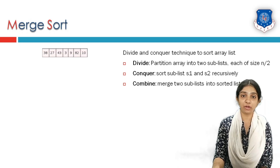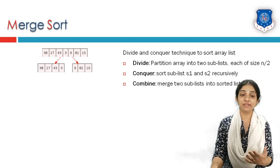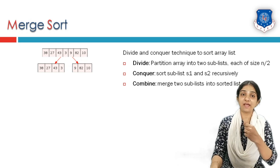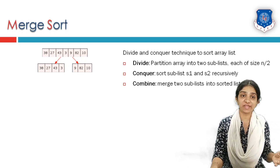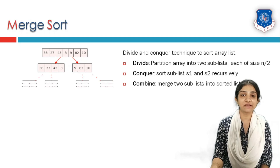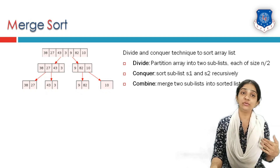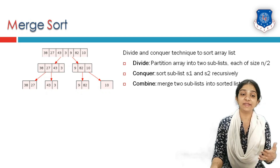Let us see how it works. For example, given an array list of elements, we divide them into two sublists each of size n/2. Since there are an odd number of elements, one extra element goes to the left-hand side sublist. These lists are then kept on being divided into halves of size n/4, so four elements get divided into two sublists each containing two elements.